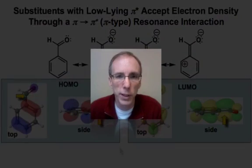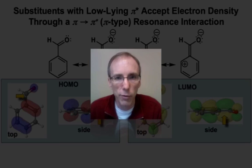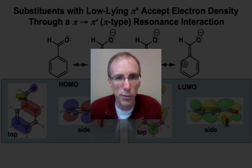In this webcast, we've seen how a substituent on a benzene ring can influence the π system's electron density, and how these changes take place at certain sites on the benzene ring. In the next webcast, we'll see how these substituent effects can favor and activate certain pathways for substitution while disfavoring others.